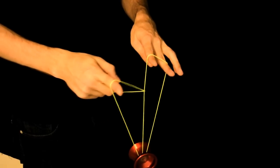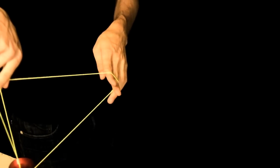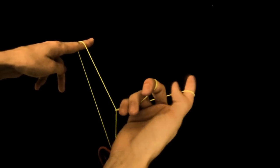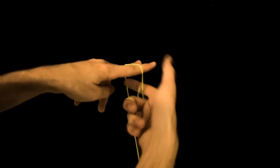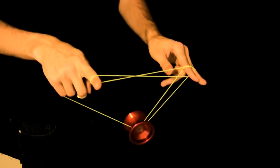Using your throw hand index finger, wrap the string in and around your finger until you point away from your body. Roll the yoyo over your non-throw hand and land on the back string.